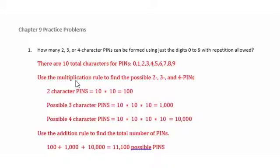Now we're going to use the multiplication rule to find the possible 2, 3, and 4 PINs. For 2 character PINs, we're going to have the first place with 10 possibilities. We're allowed to repeat digits, so the second digit will also be 10 possibilities. So 10 times 10 equals 100.